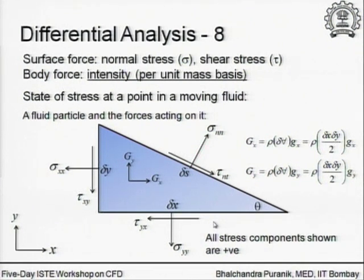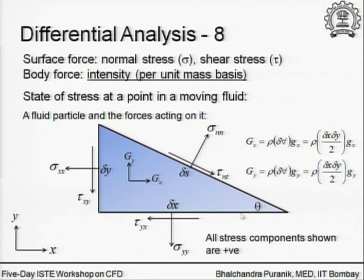The first subscript of tau_yx: y is pointing where the unit normal for the area is pointing, that is in the y direction. The second subscript is its own direction, which is in the x direction. With that we have essentially come up with the notation and the sign convention, where everything shown here is positive. What we will do tomorrow is show that if you are able to specify two stress components which are mutually perpendicular on two planes which are mutually perpendicular in a 2D situation, you are in a position to define the state of stress completely.